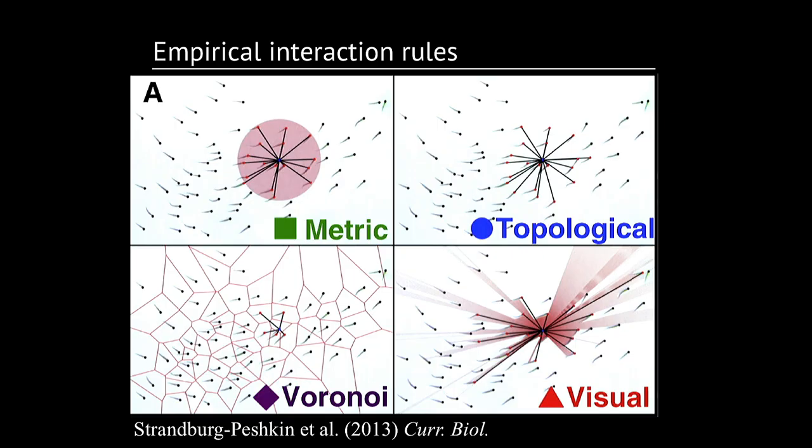There have been quite many experimental studies that I won't have time to review now, trying to infer the interaction rules in these different animal species. What we can conclude from these studies is that these interactions apparently are different for different species.